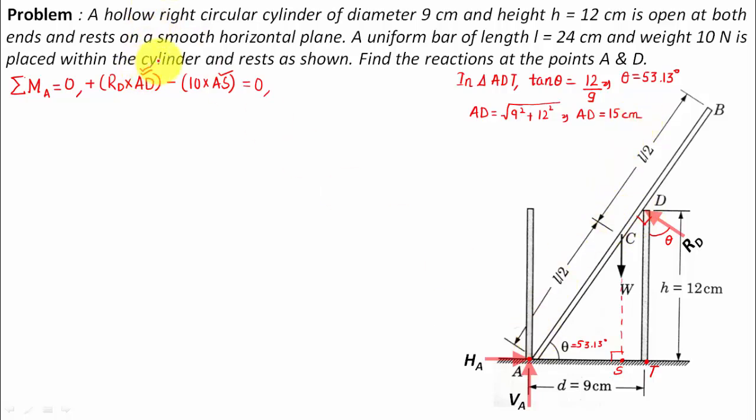What else do we need? We need the value of AS also. So let's figure out how this can be calculated. Now the length of this bar is 24. You already have this weight acting centrally, so over here from this point to this point it's going to be equal to half of 24. So L by 2 essentially equals simply 12 centimeters.